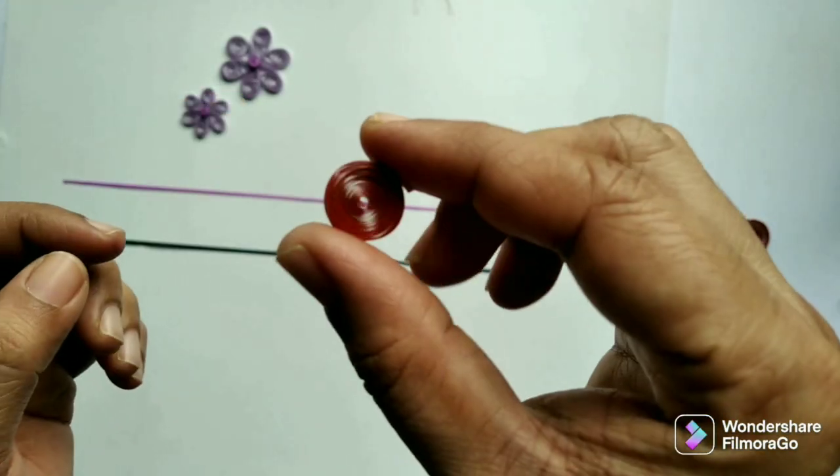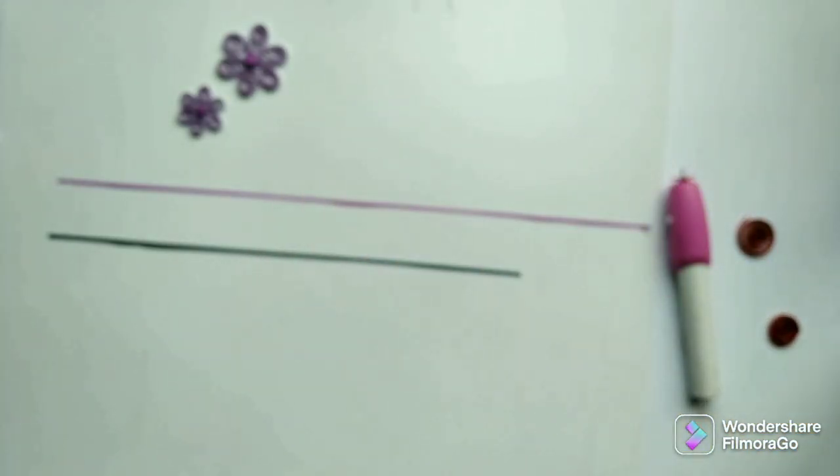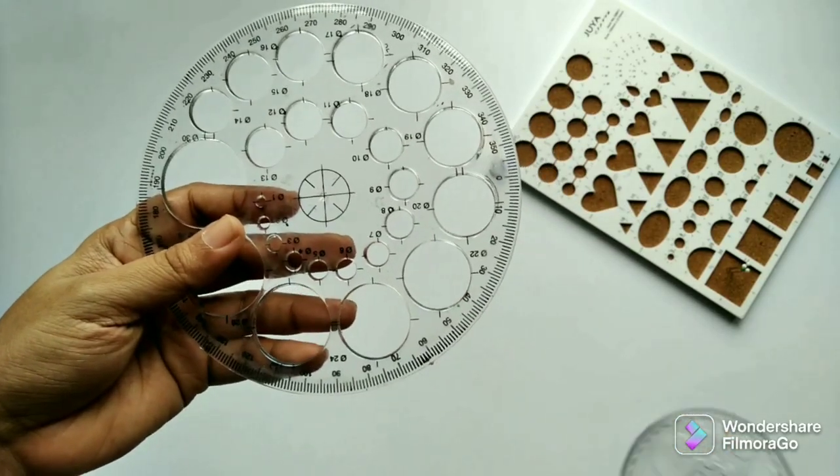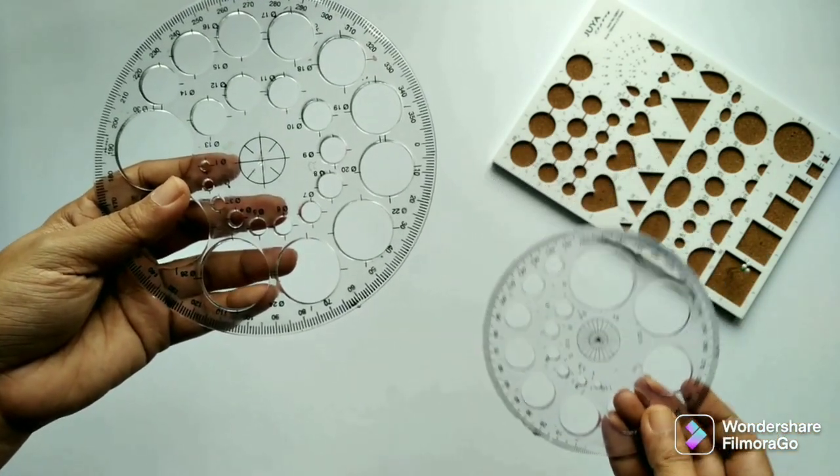Now when I roll a full strip and make a loose coil, I put it into a quilling board or a circle sizer. These circle scales are available in different sizes and are inexpensive and easily available.